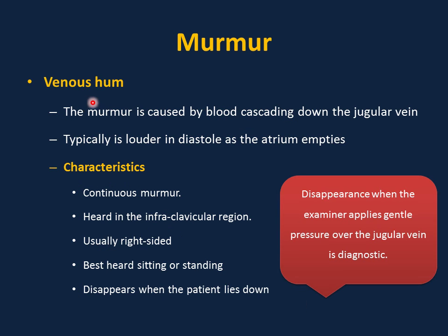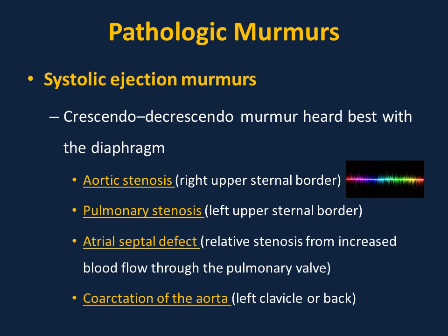Venous hum is another benign murmur caused by blood cascading down the jugular vein. It is typically louder in diastole as the atrium empties. Characteristics: continuous murmur heard in the infraclavicular region, usually right-sided, best heard sitting or standing, disappears when the patient lies down. Disappearance with gentle pressure applied over the jugular vein is diagnostic.